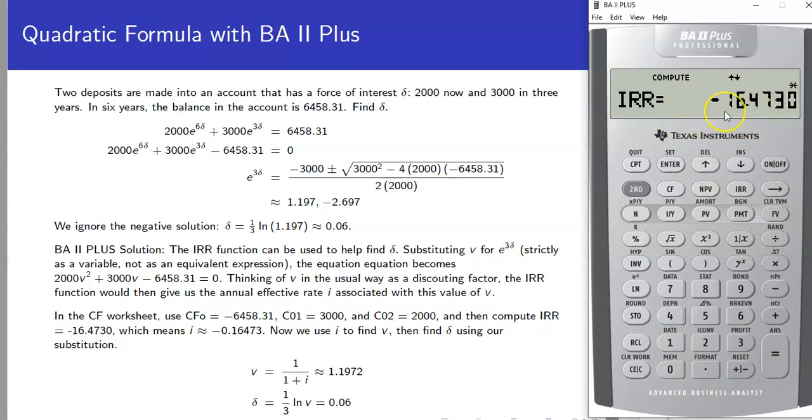Notice that it even says that it's negative here. So we can use this to find our value of v. Let's hit clear, let's divide this by 100, let's add 1 and reciprocate it. That gives us the value of v.